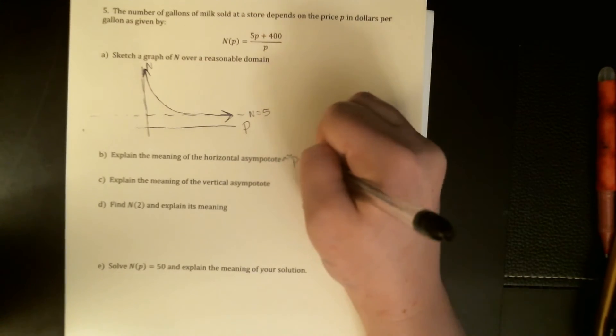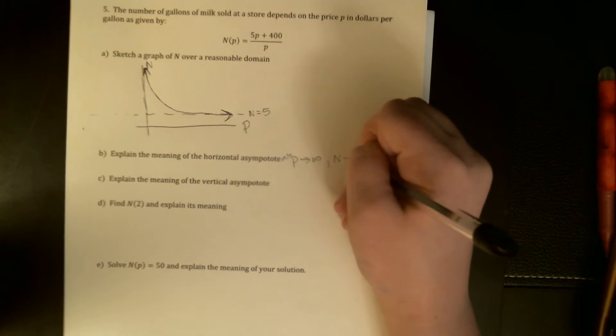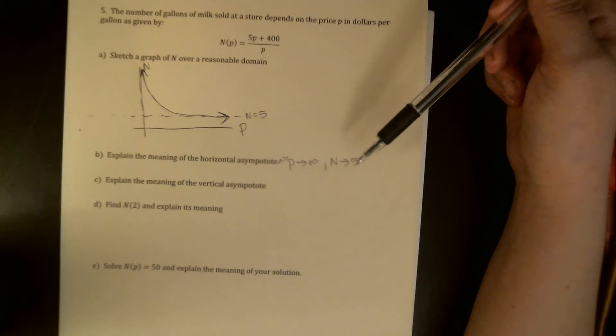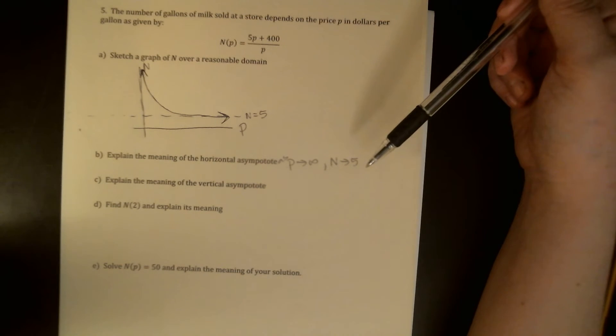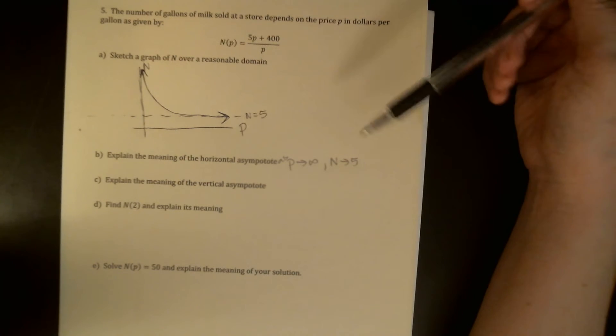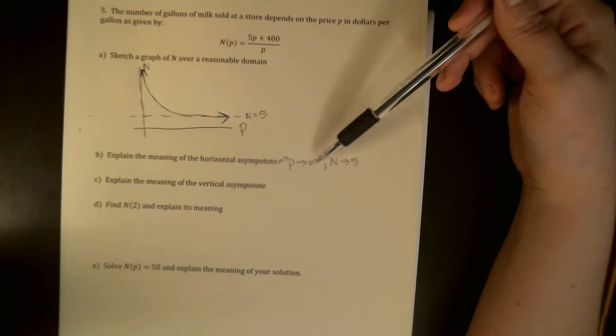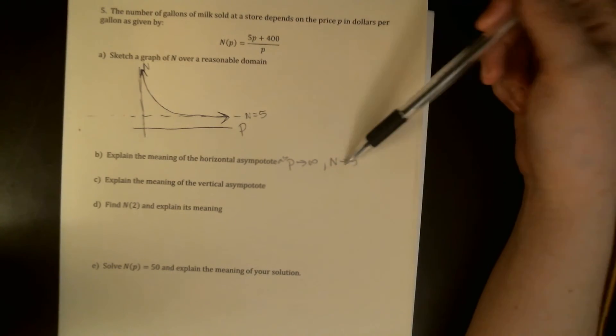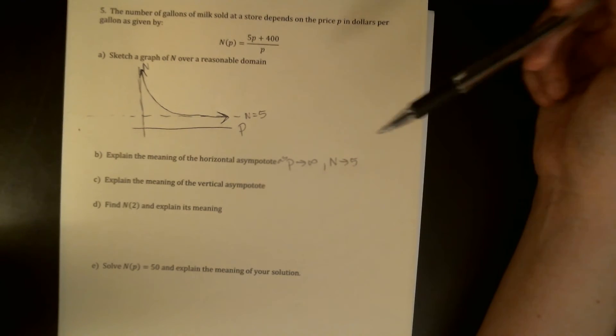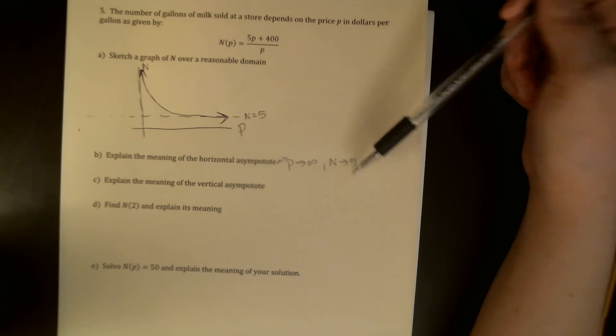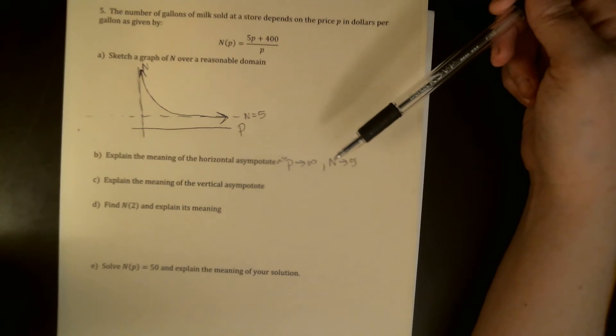I'm going to say, as p goes to infinity, I don't care about the negative infinity because it doesn't make sense, n gets really close to five. And then you interpret this in terms of milk. This is saying as the price gets higher and higher, no matter how high it gets, you're always going to be able to sell at least five gallons of milk. If an item is truly necessary, you will get this asymptotic behavior where no matter how high you raise the price, there's a certain number of people that will always buy it. My explaining here would be no matter how high the price is, there will be at least five gallons of milk sold.